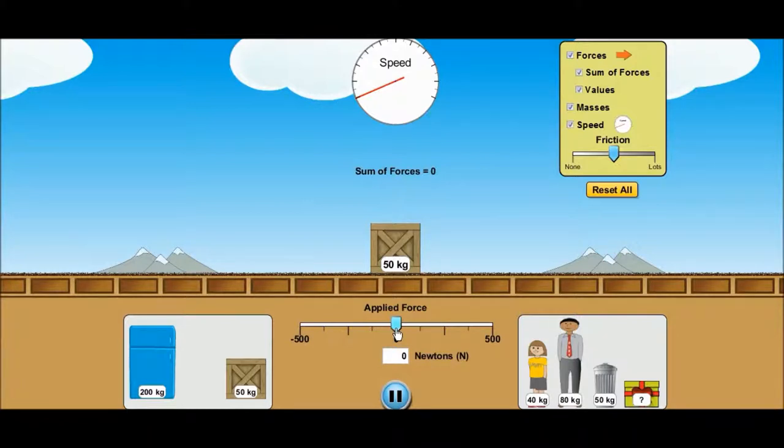So to take away from this, if you want to move an object, you have to unbalance the forces. Now in the real world, where there is friction, you have to be able to overcome the force of friction that that object is fighting against you with. So there we are, that's friction.